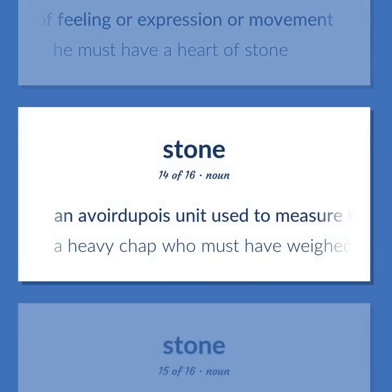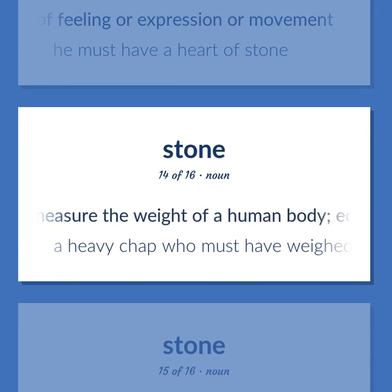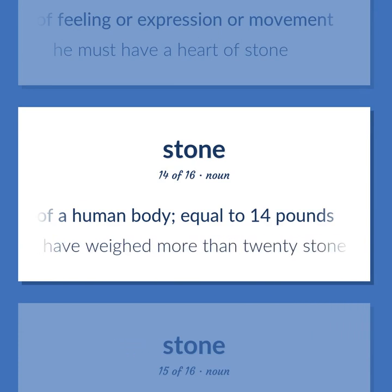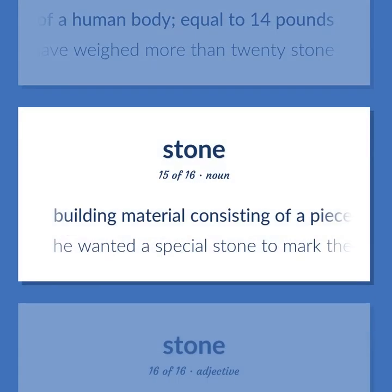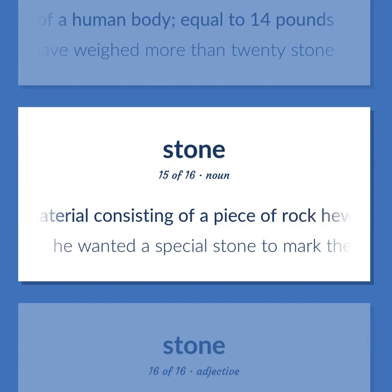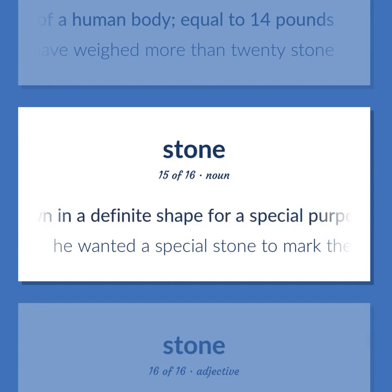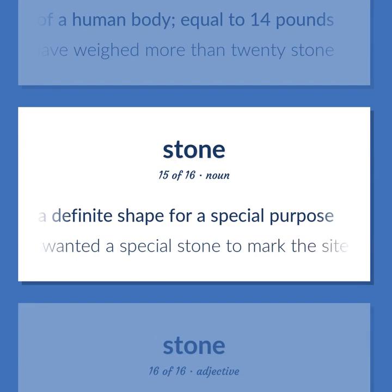An Avoirdupois unit used to measure the weight of a human body, equal to 14 pounds. A heavy chap who must have weighed more than 20 stone. Building material consisting of a piece of rock hewn in a definite shape for a special purpose — he wanted a special stone to mark the site.